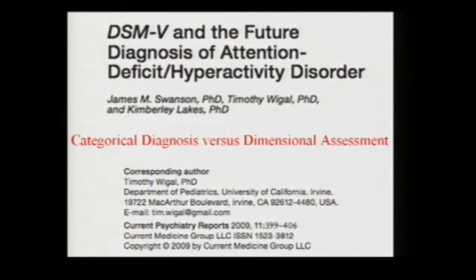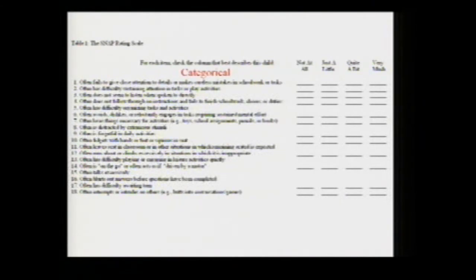One important evolving issue is the definition of the ADHD phenotype. A major question in the revision of DSM-IV toward DSM-V will be whether a categorical or a dimensional definition might be best. This is an example with the 18 symptoms listed of a categorical definition, where one asks whether a child is qualitatively different and has impairment associated with these symptoms.